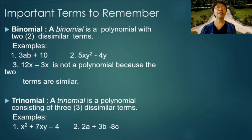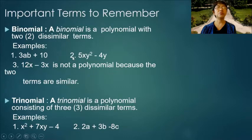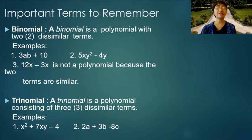Binomial: a binomial is a polynomial with two dissimilar terms. Examples: 1) 3ab plus 10, 2) 5xy squared minus 4y, 3) 12x minus 3x — but this third example is not a binomial because the two terms are similar, which means they can be added and it reduces to only one term.